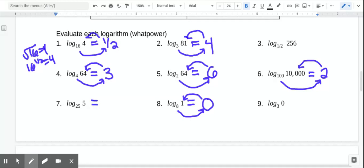I think that works with number 7 as well. I'm thinking 25 to what power gives me 5? Well, I know the square root of 25 is 5, which is 25 to the 1 half. So this is 1 half.